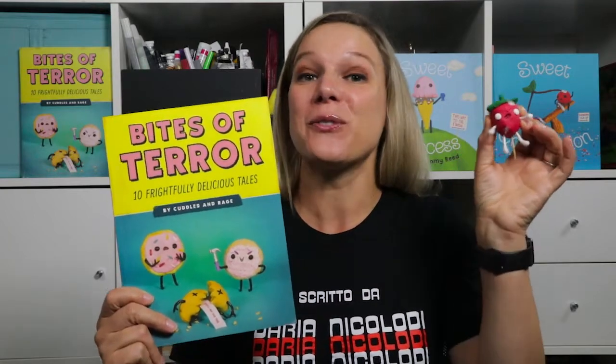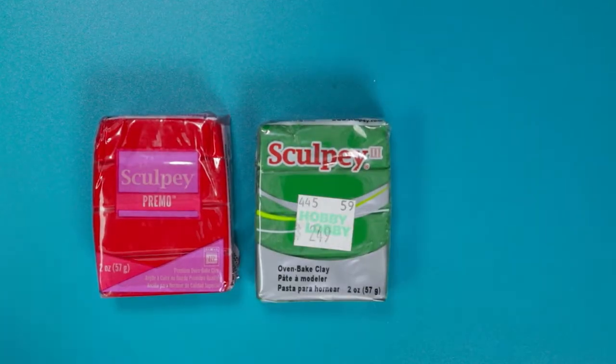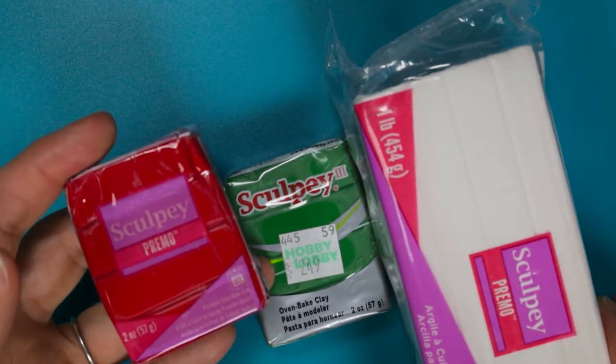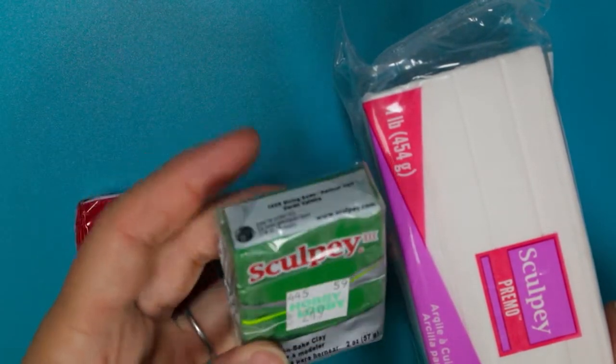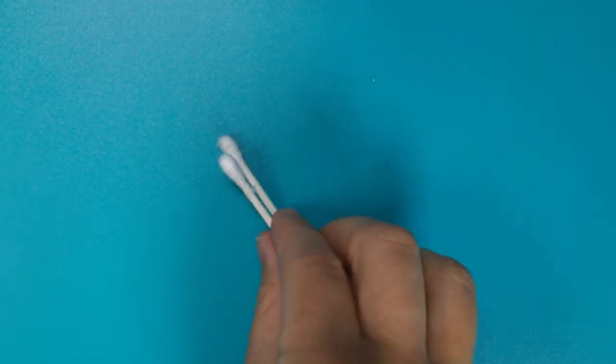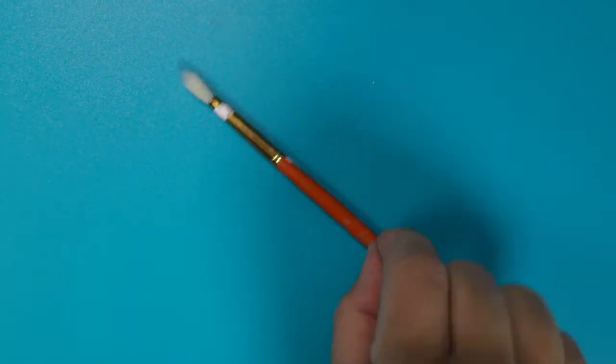So without further ado, let's get started with sculpting. Here's what you need to get started: red, green, and white clay. Here I have a mixture of Sculpey and Primo, which are clays you need to bake in an oven. You can also use air dry Crayola. You'll need some foil, toothpicks, Q-tips, cotton balls, a paintbrush, gray paint or markers, glue, a cutting tool, and a clean workspace.